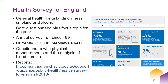The Health Survey for England covers general health, long-standing illness, and smoking and alcohol use. It has a core questionnaire plus a focus topic for the particular year. It has been run annually since 1991 and currently has about 13,000 interviews per year. As well as the questionnaire, there are also physical measurements and analysis of blood samples. On the right you can see some information derived from the 2018 Health Survey for England.